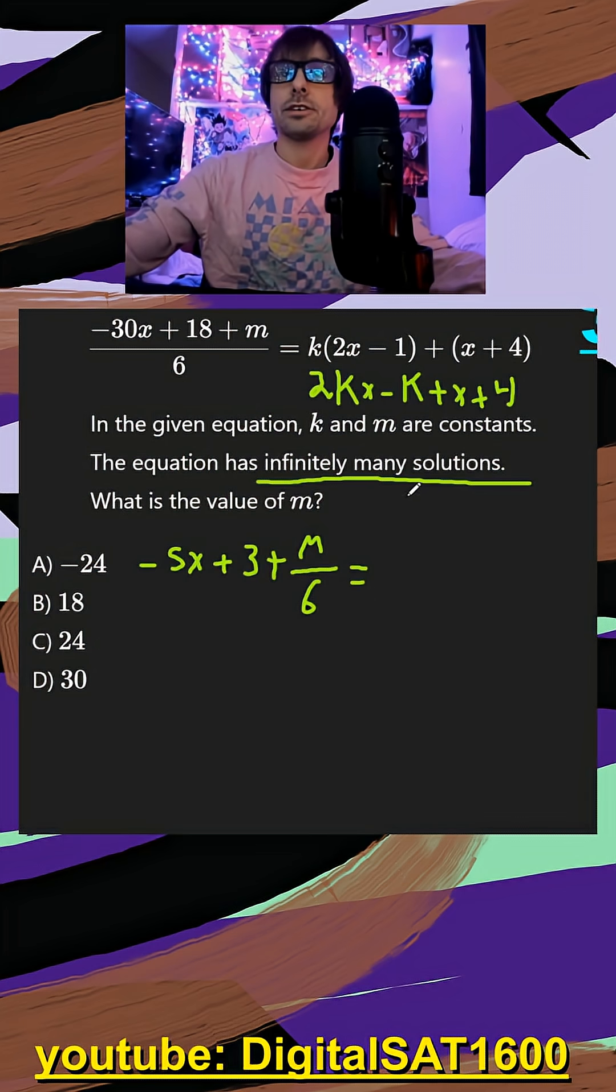So I want to group my like terms together. So I want to group my x's. So that's going to be 2kx plus that extra x, and then minus the k, and then plus 4.